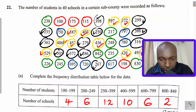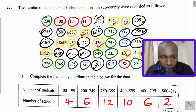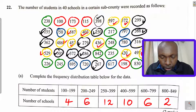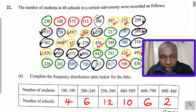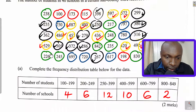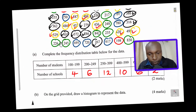To confirm the answers, since there are 40 schools, the total frequency should add up to 40. Adding the cumulative totals: 4, then 10, then 22, then 32, then 38, and finally 40. The frequencies are 4, 6, 12, 10, 6, and 2, and they sum to 40. That is how you complete the first part of the question.